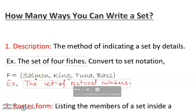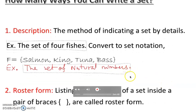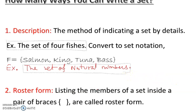The set of four fishes — if we convert to set notation, that is the set notation: open braces, closed braces. You can come up with many fishes — I choose salmon, king, tuna, bass. Those fish are delicious. How many types? One, two, three, four — four members. So I can convert into a set notation. Sometimes we call it roster. The set of natural numbers is equal to the set of one, two, three, four, dot dot dot — ellipsis.